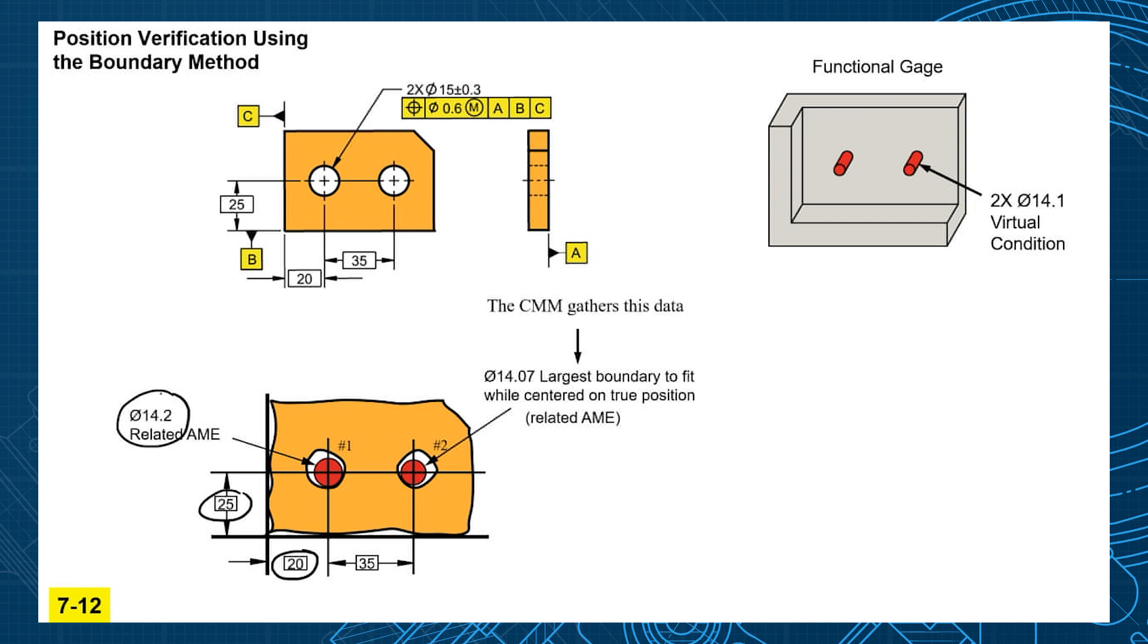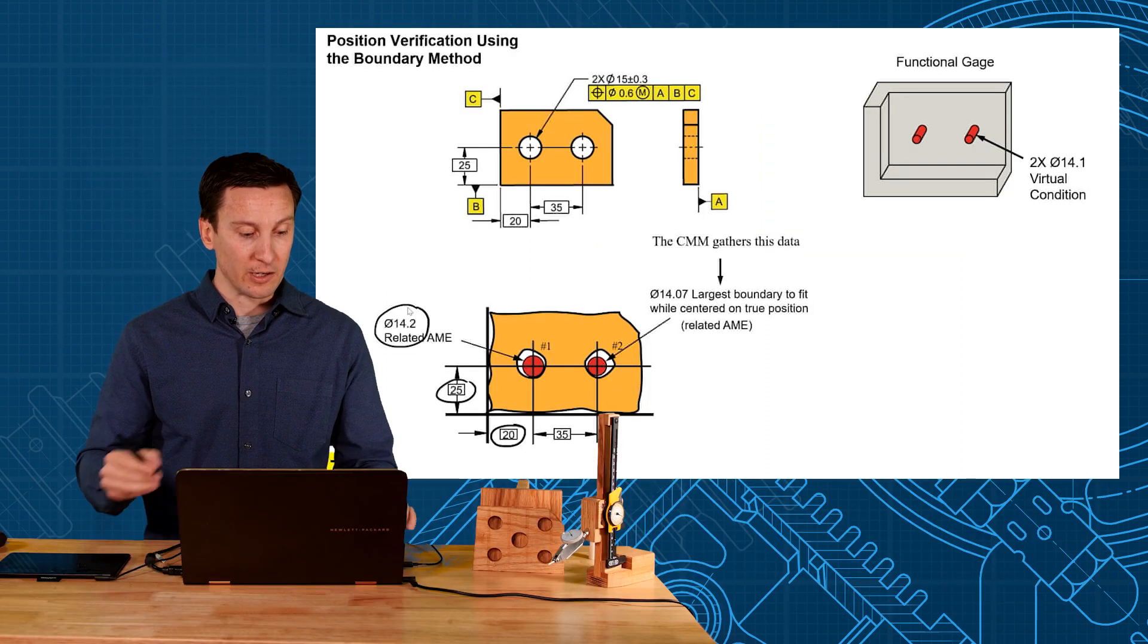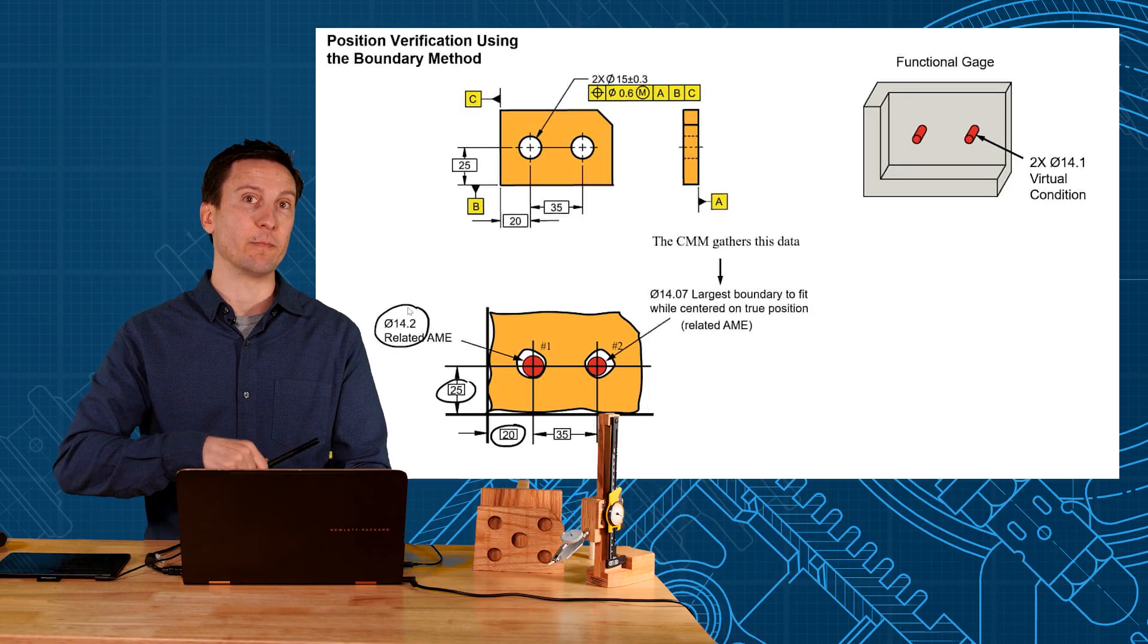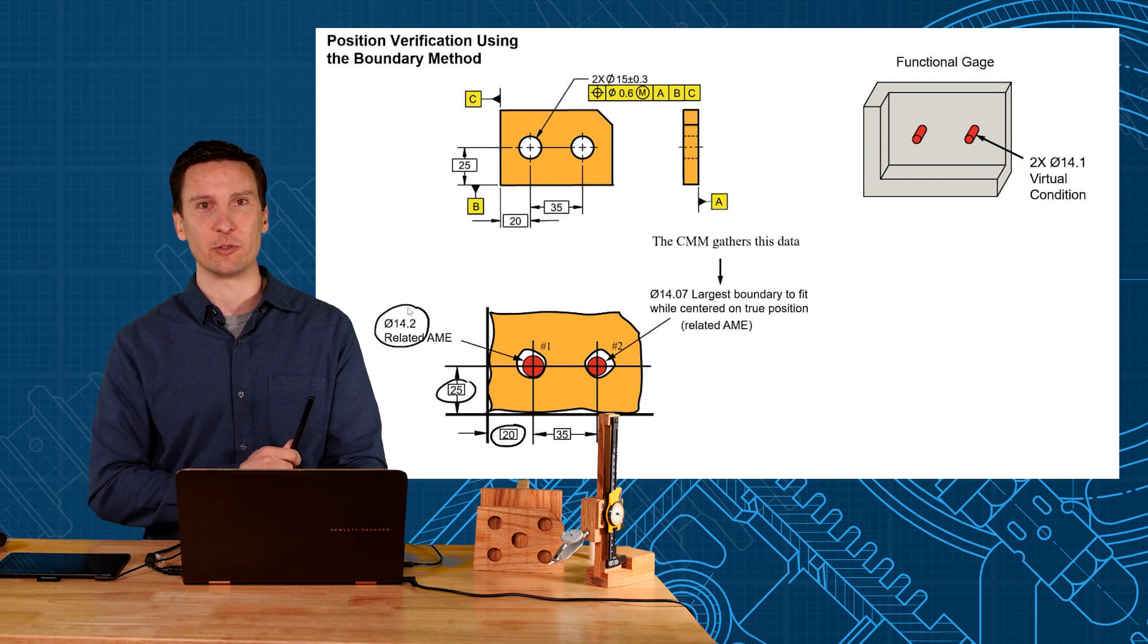That's what we call the related actual mating envelope. And then we can compare that related actual mating envelope to the virtual condition, which is the worst case it's allowed to be.